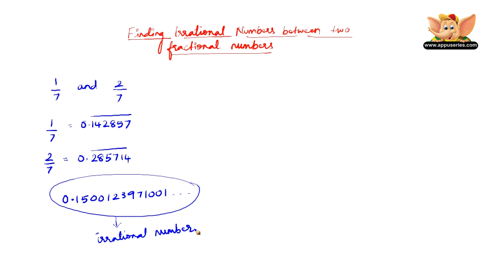So an irrational number between 1/7 and 2/7 is this. Let's quickly take another example. Only this time we are going to find more irrational numbers between these two but putting in the same effort.